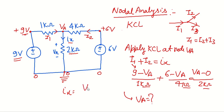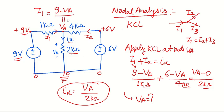So Ix value will be VA divided by 2 kilo ohm. Similarly, once VA is obtained, we can easily find out value of I1 because I1 equals 9 minus VA divided by 1 kilo ohm, and I2 will be 6 minus VA divided by 4 kilo ohm.